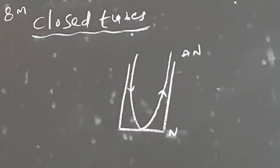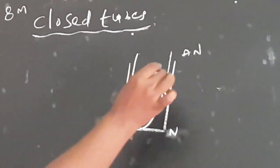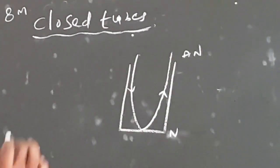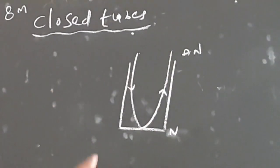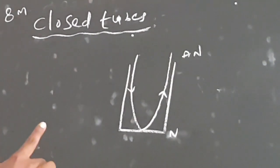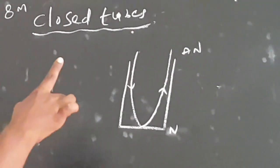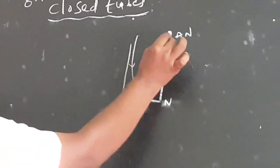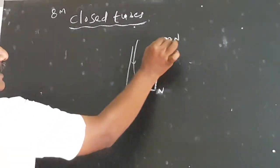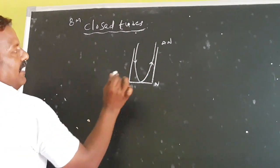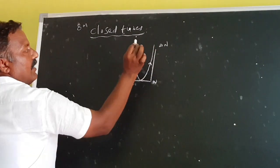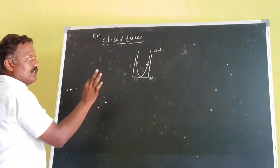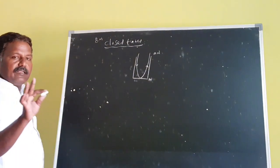The distance between the open end of the tube and the anti-node is called end correction. Some distance exists between the anti-node and the end of the tube. This is called the actual end correction, denoted by E.